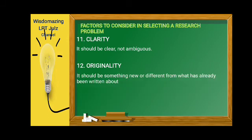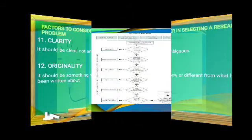And of course, number twelve is originality. It should be something new or different from what has already been written about. So recency is one of the important elements of research. It must be something new. Hindi naman yung masyado ng luma, mga nagawa na ng research. You should think of something new or different from what has already been written about. Otherwise, your research won't be interesting to your readers.